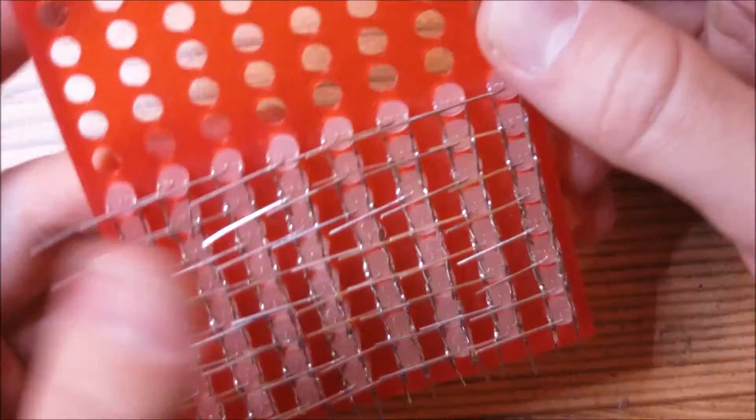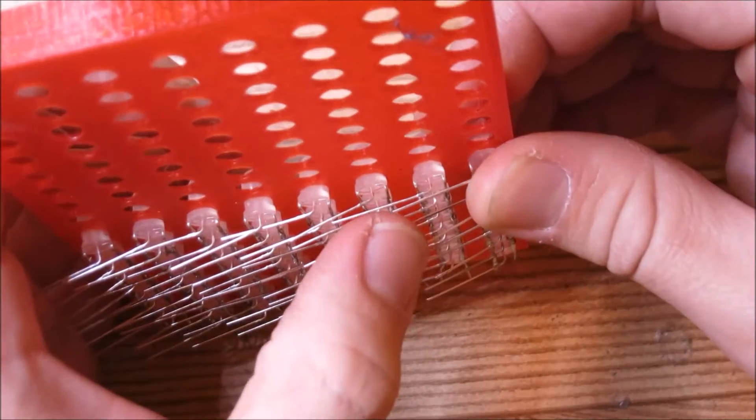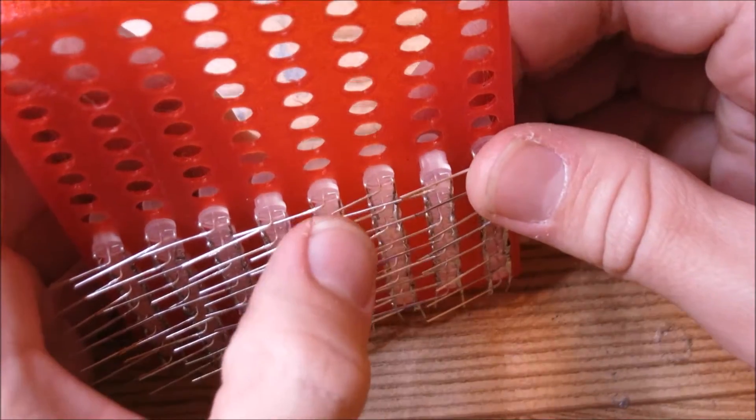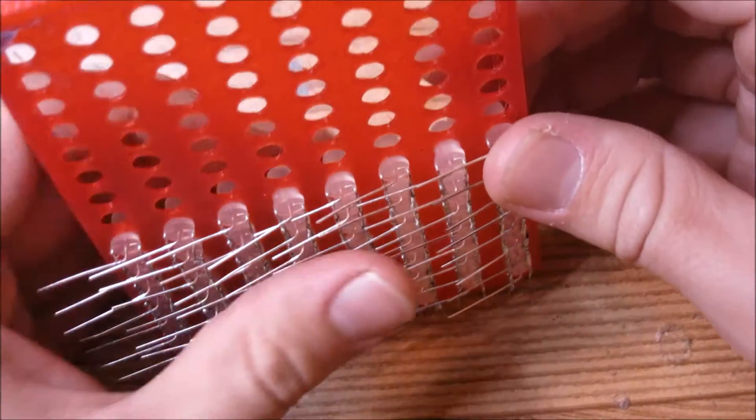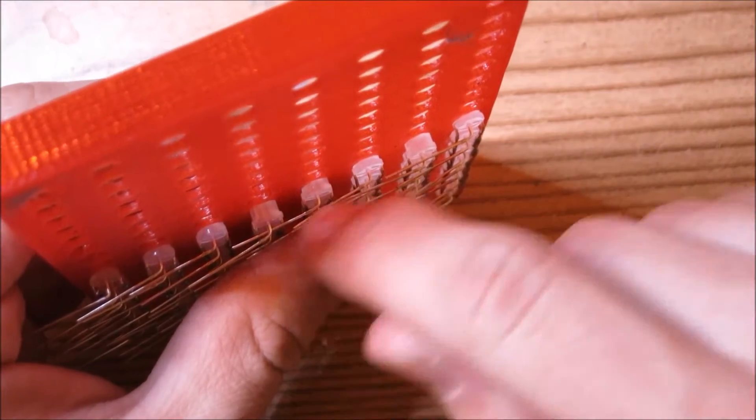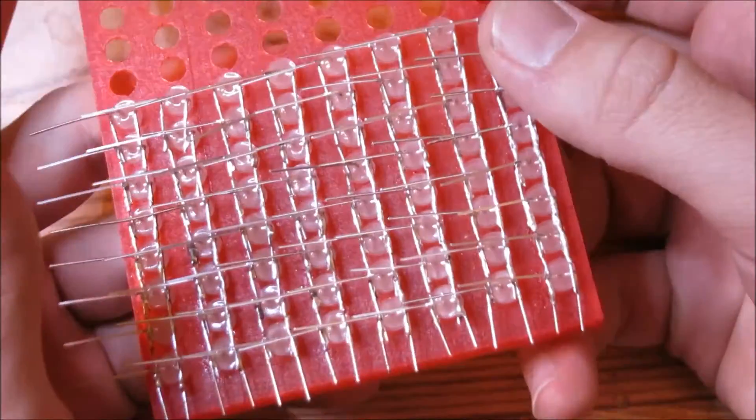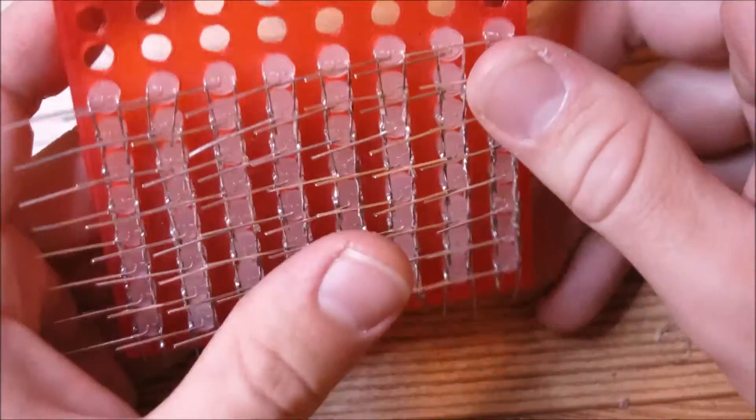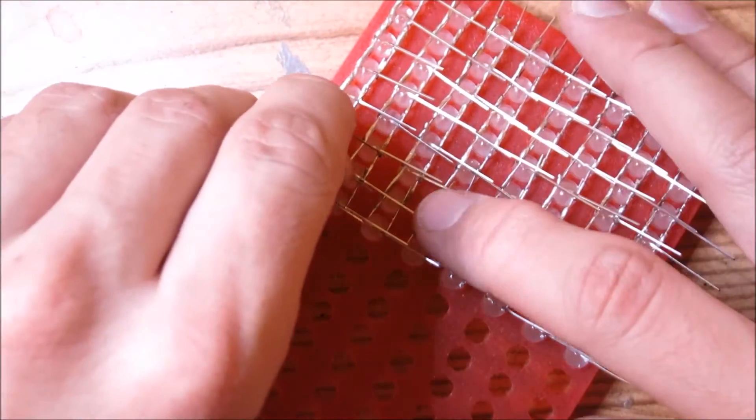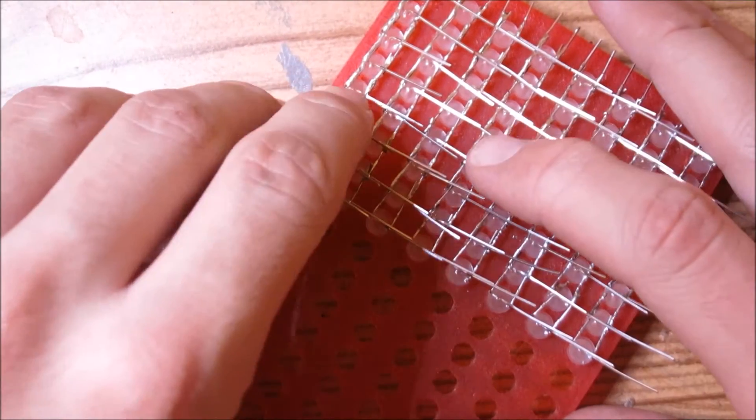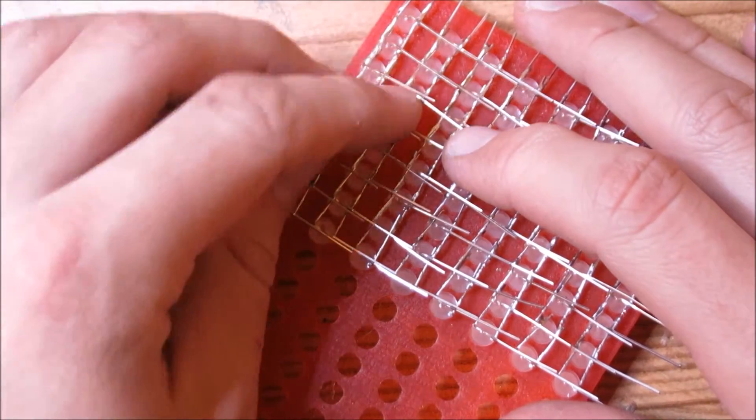So now what you want to do is solder this lead to this lead, and this lead to this lead. So basically you just want to solder all of these together, taking care not to bridge any of the connections between these and the wires going up and down this way. So that's the task at hand. So what I like to do is kind of pre-bend each lead so it kind of lines up over the top of the next one, so it's a lot easier to solder.